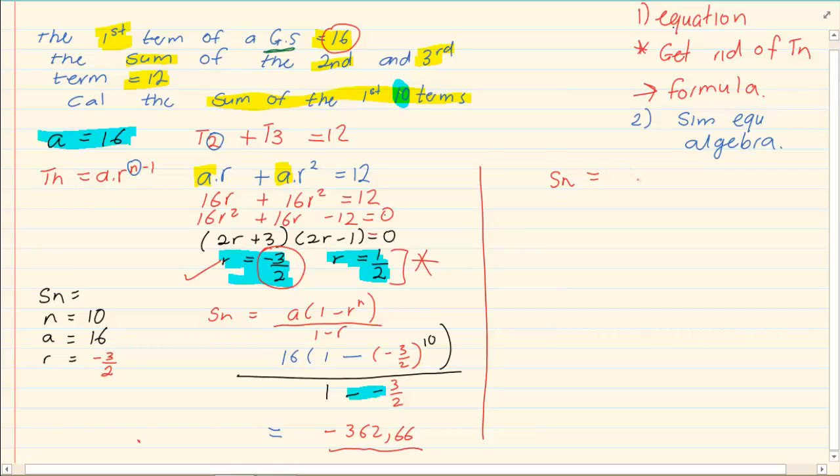So we're going to take our formula again. Sn is equal to a, one minus r to the power of n, all over one minus r.